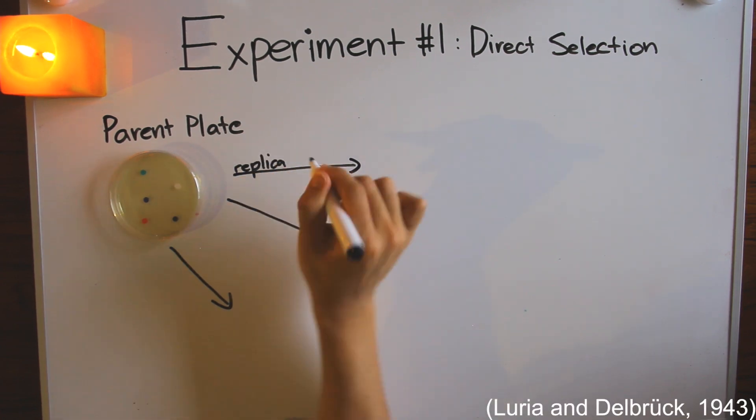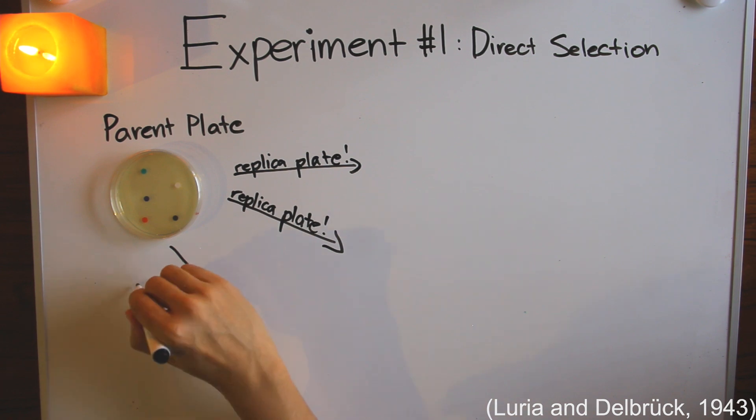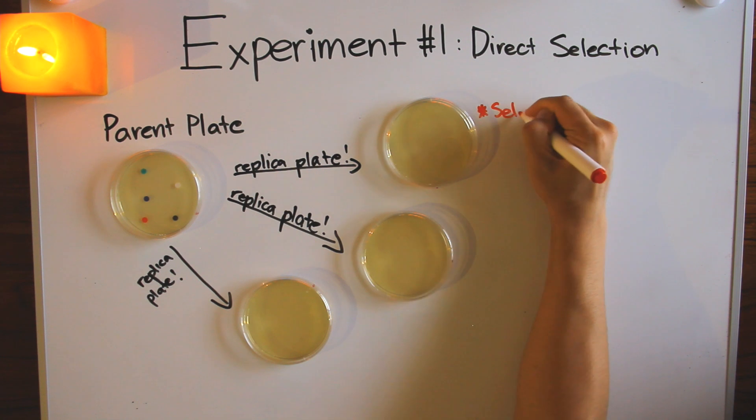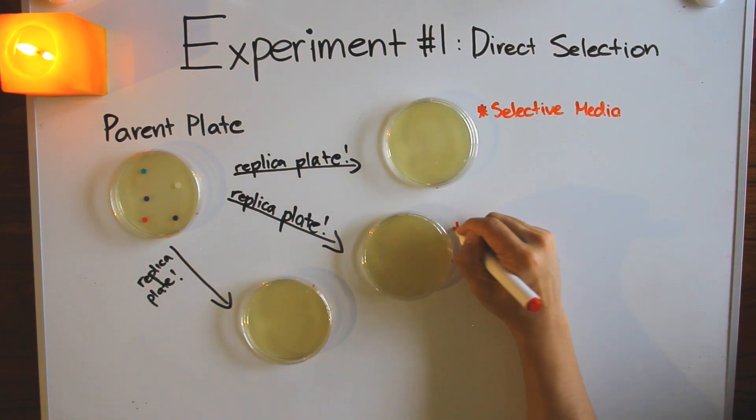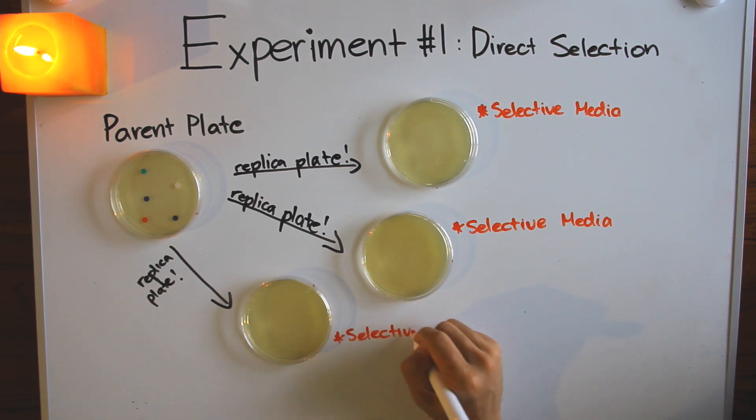If mutations were directed, then we should expect to see the distribution of surviving colonies to be completely random. That is, which colonies survive and how many colonies survive from trial to trial should be different. This is because each colony would be equally likely to mutate and become resistant.